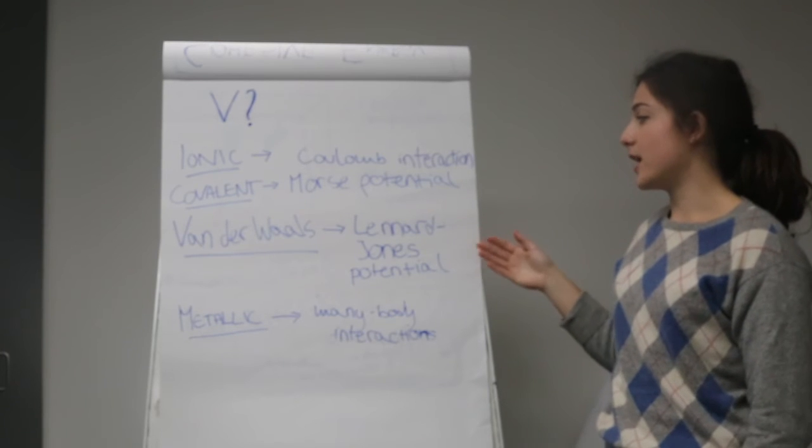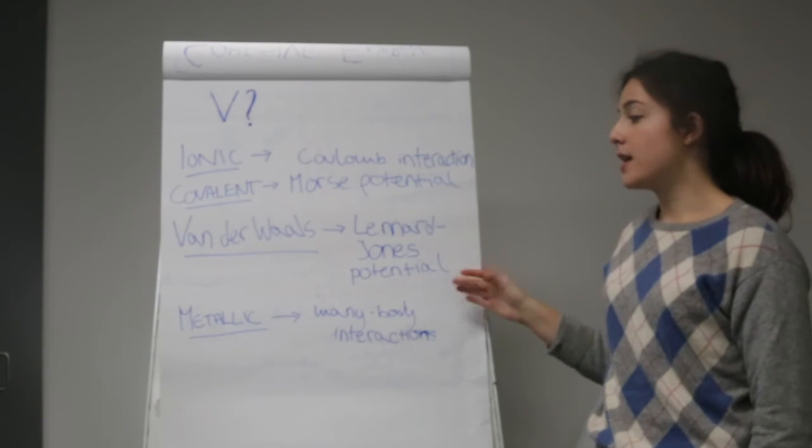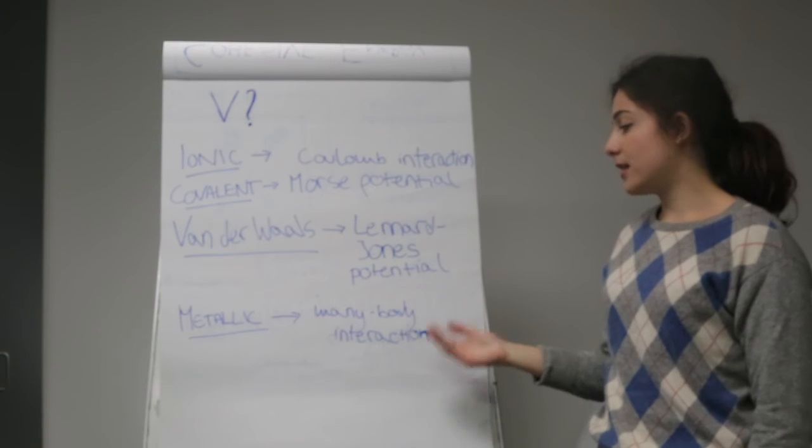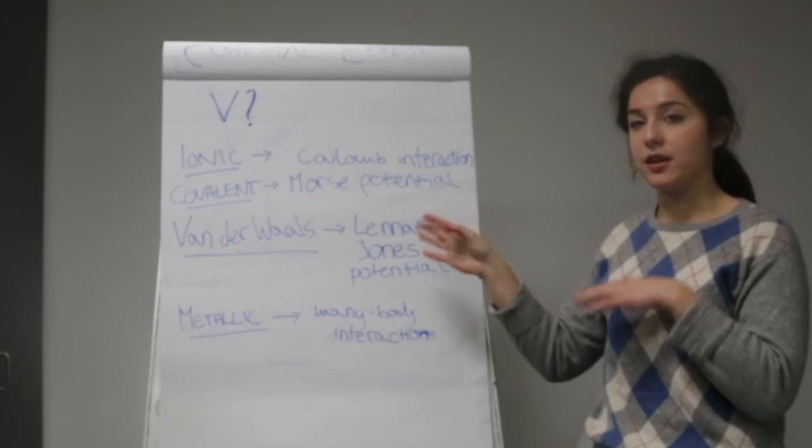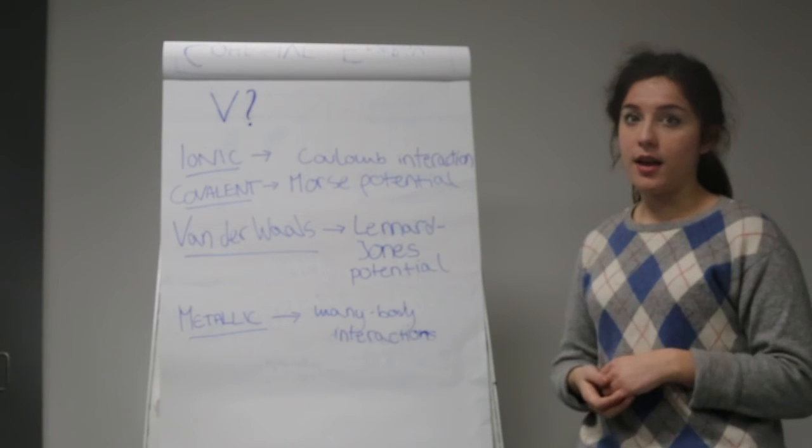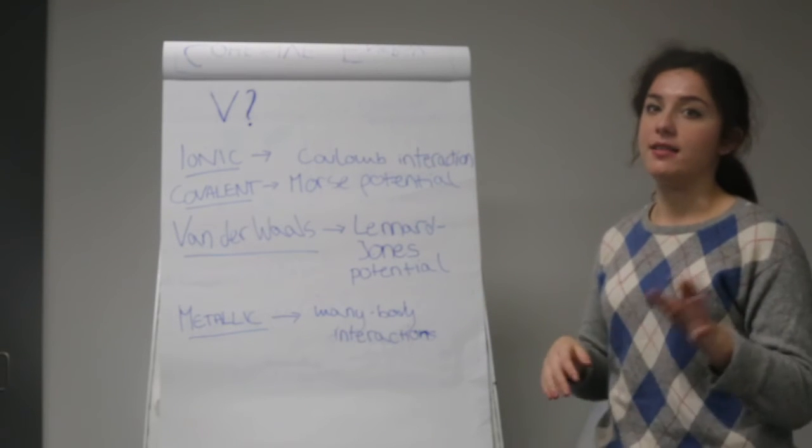If it's van der Waals bonds, we can use Lennard-Jones potentials. And if we have a metal, we need to think about a many-body interactions model that deals with the position of each atom and ion, and the angles between them.